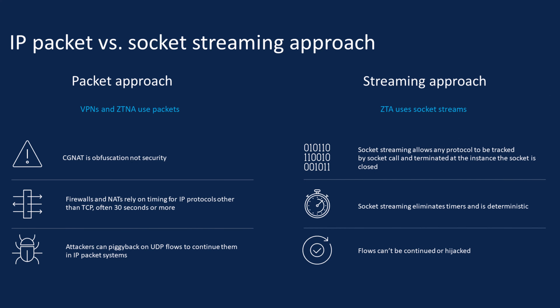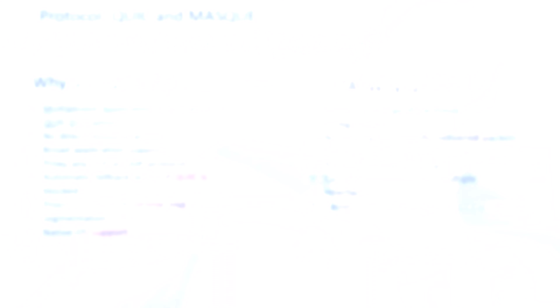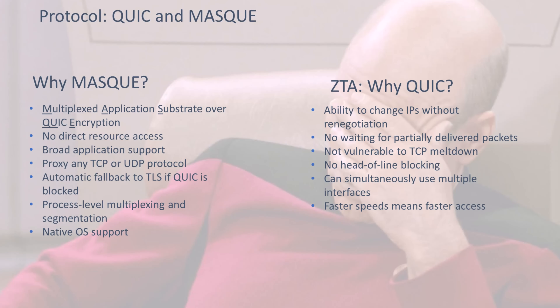Quick has the ability to change IP addresses without renegotiation of that particular session. That means if it's wired, wireless, or even a cellular network, it's transparent to the end user. A few more benefits of Quick: it's encrypted end-to-end, and it's incredibly fast.